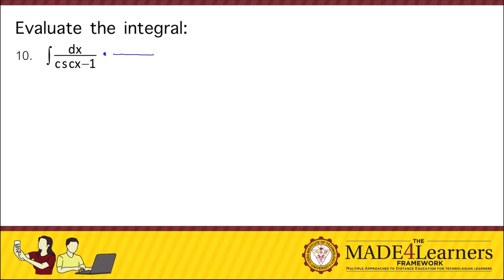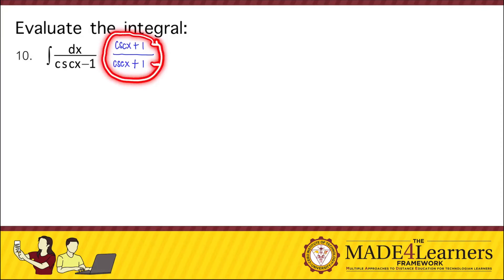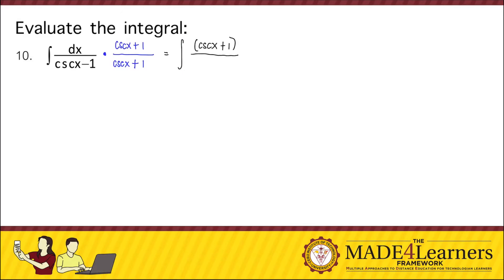So if we have cosecant x minus 1, then its conjugate would still contain cosecant x and 1, but it will have an opposite sign — so that's a plus: cosecant x plus 1. Remember that whatever you multiply in the denominator, you should also multiply the numerator with the same thing so you're multiplying the given by 1 and not changing anything. So we have cosecant x plus 1 over the product of cosecant x plus 1 times cosecant x minus 1, dx in the denominator.